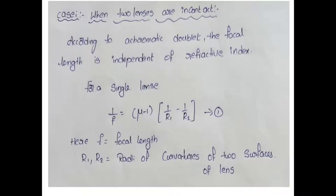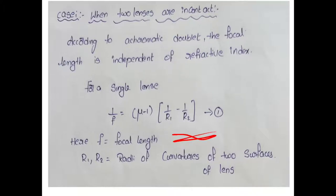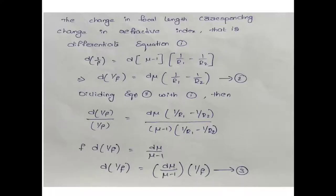The third point is that the focal length of an achromatic doublet is independent of refractive index. So when we place the achromatic doublet in an optical system, the focal length does not depend on refractive index. The change in focal length corresponds to the change in refractive index, which we analyze as the chromatic doublet condition.